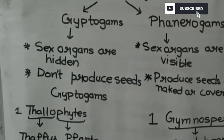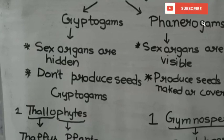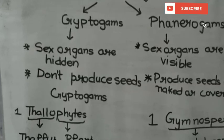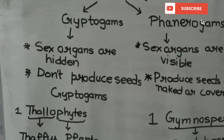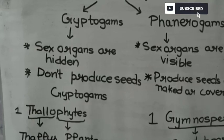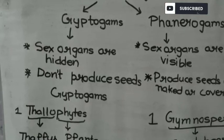The Plant Kingdom is divided into Cryptogames and Phanerogames. Cryptogames have hidden sex organs and do not produce seeds. Phanerogames have visible sex organs, are seed-bearing, and seeds can be naked or covered. Cryptogames include Thallophytes, Bryophytes, and Pteridophytes.